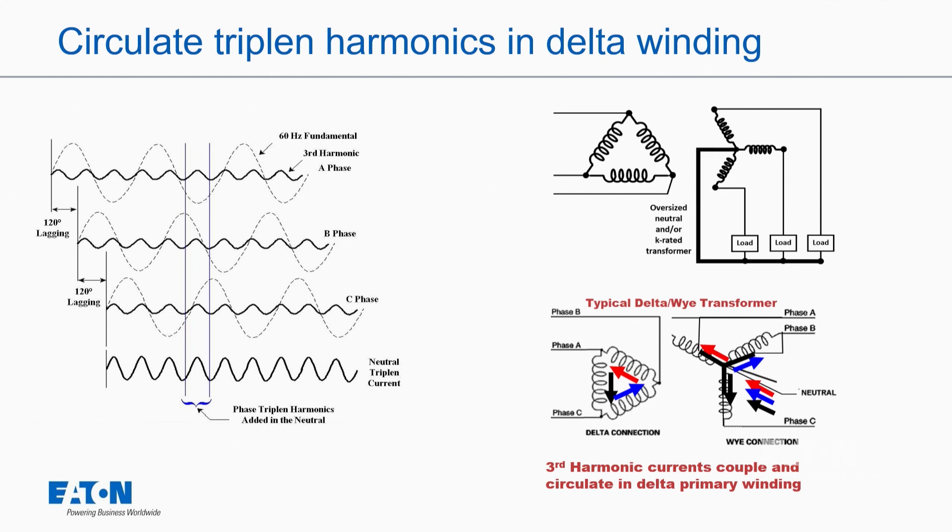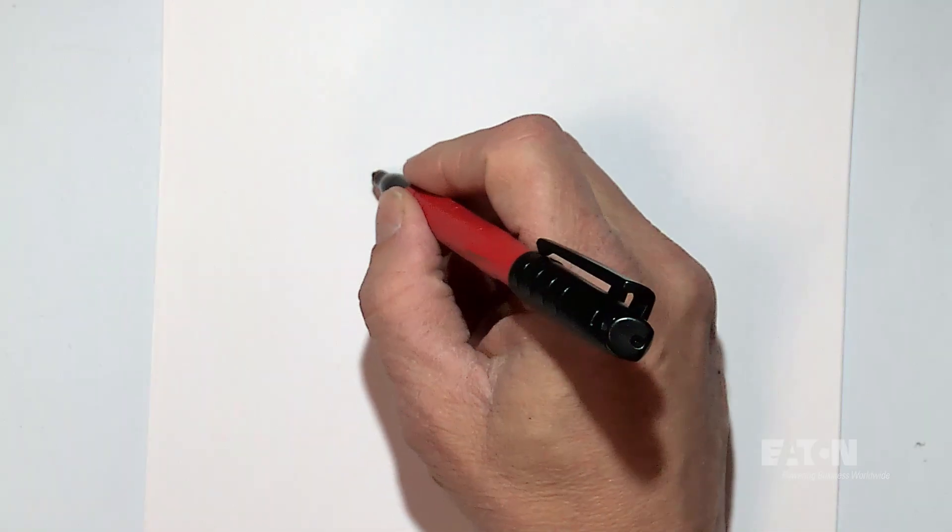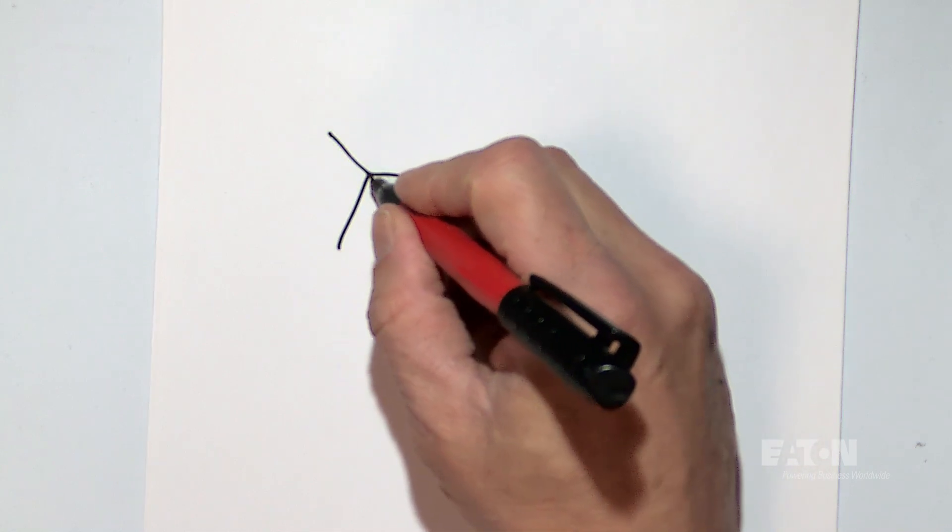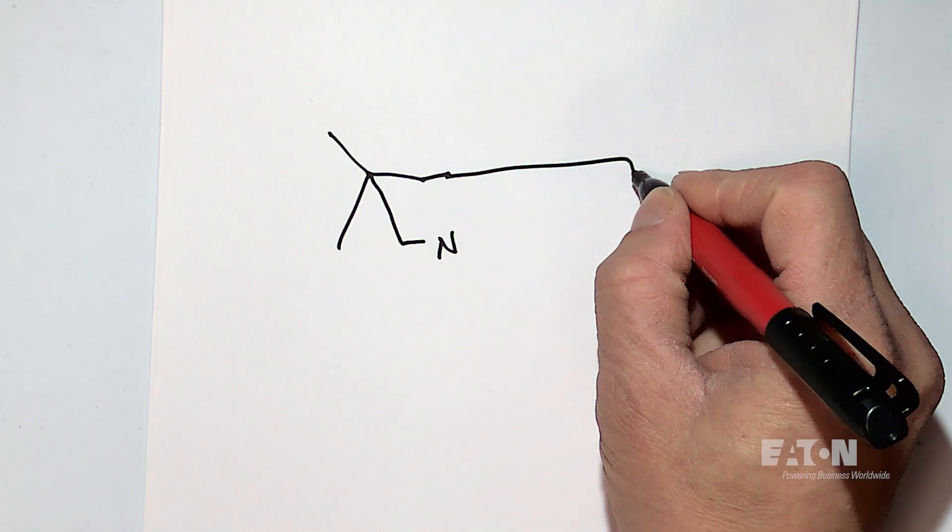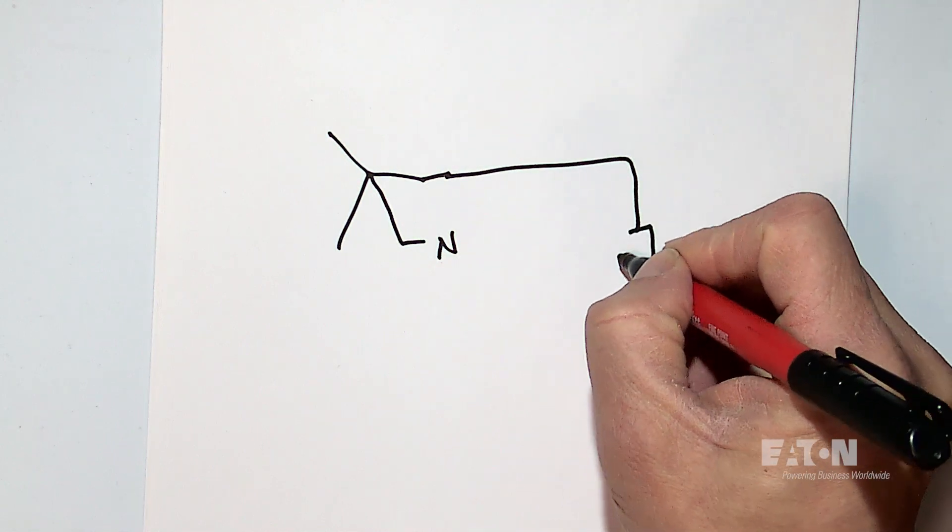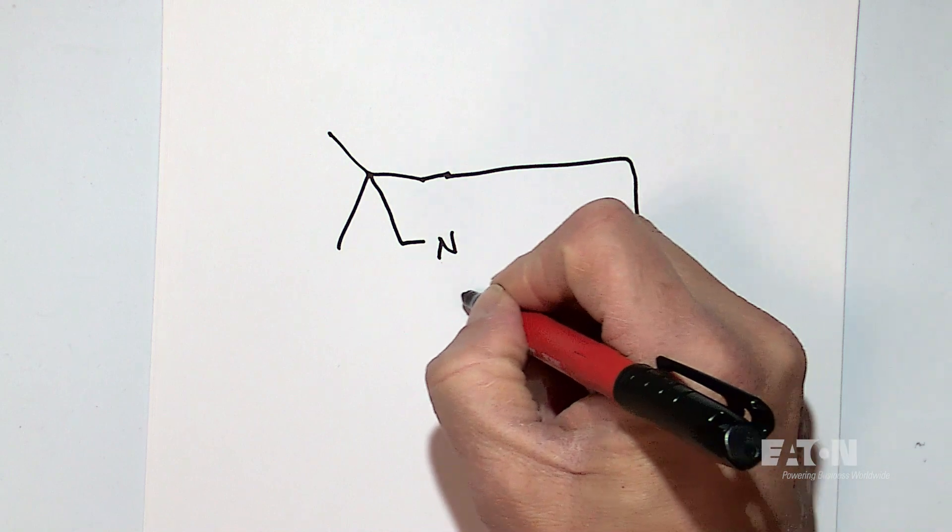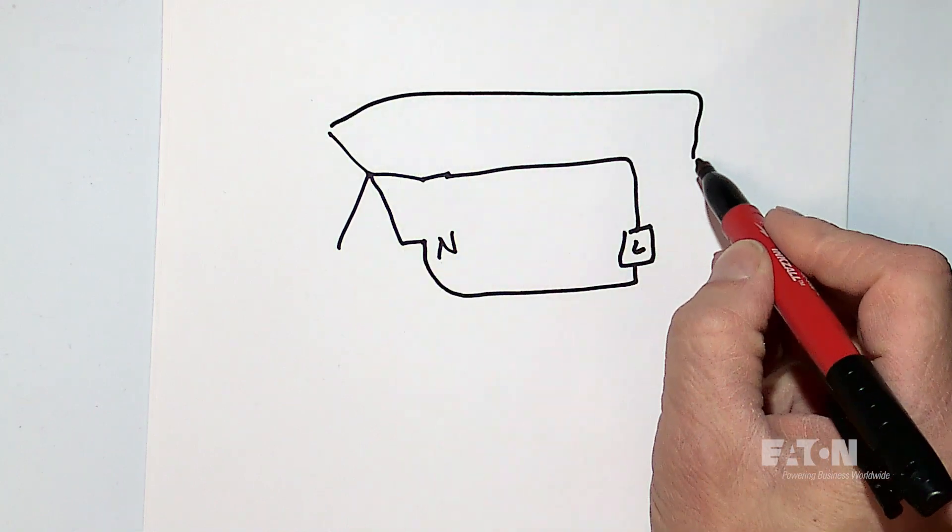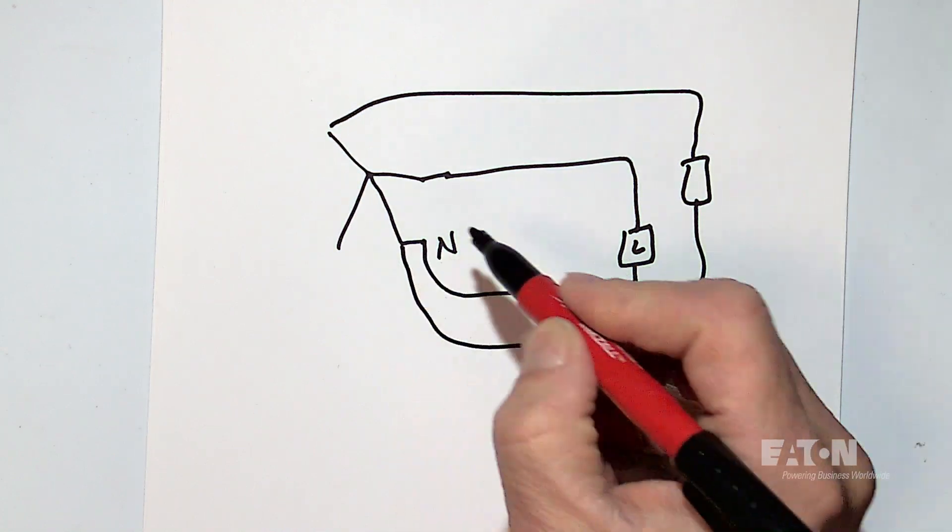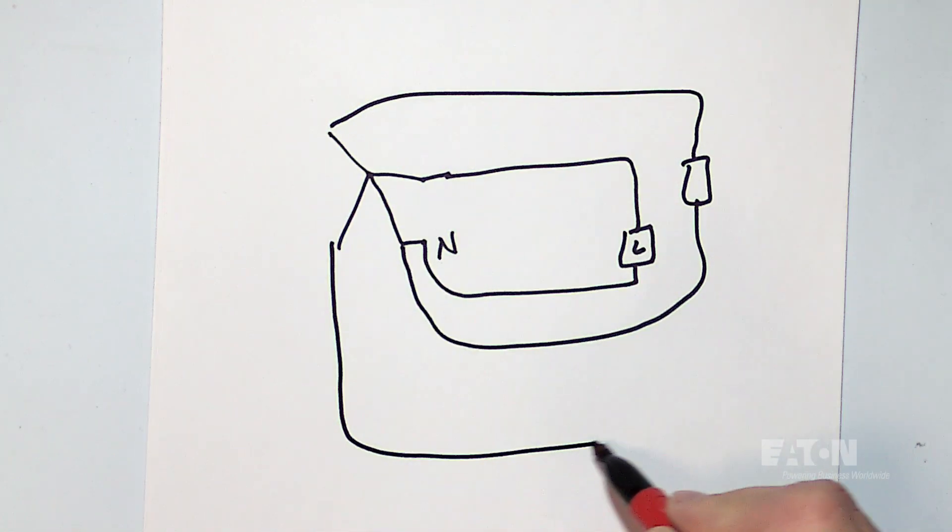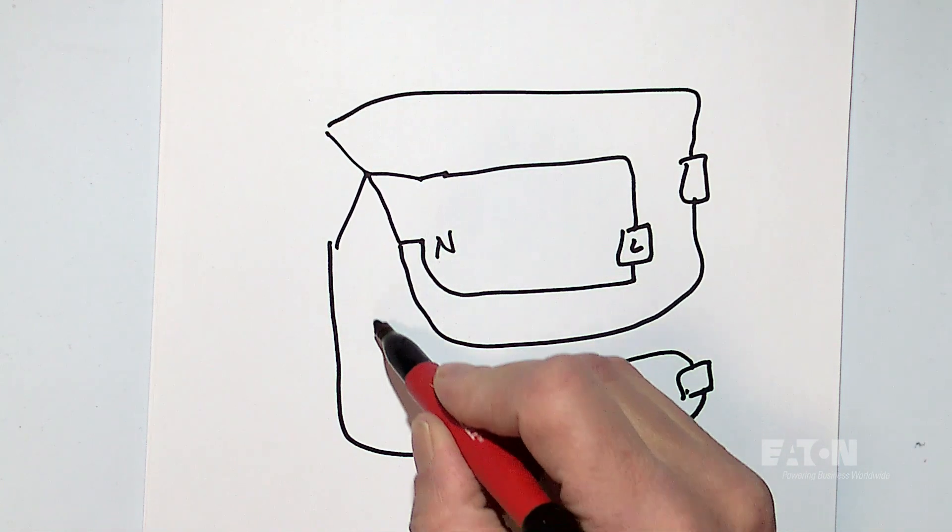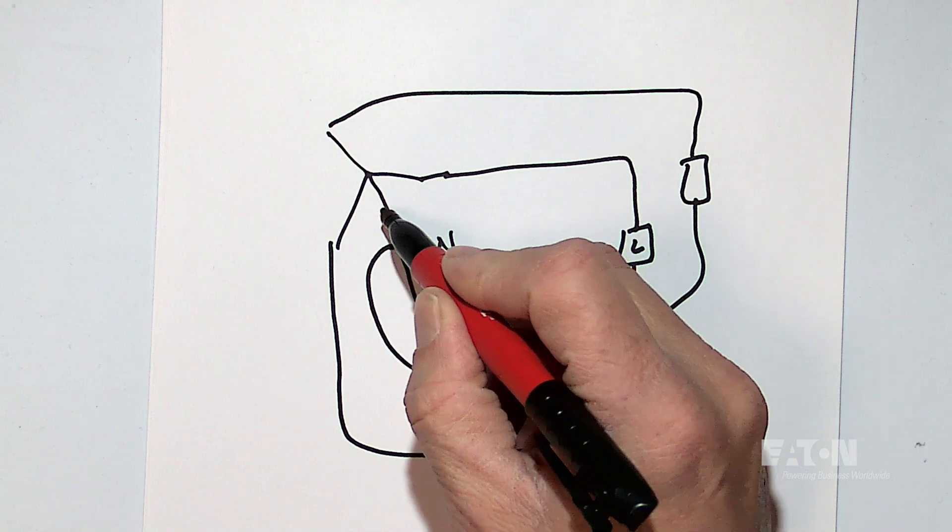So again, if I have a system here, a Y system, and I have a neutral coming out, I could have a load here on each phase. And I could have that neutral current coming back. And again, phase A, phase B, and phase C coming back to my neutral point.